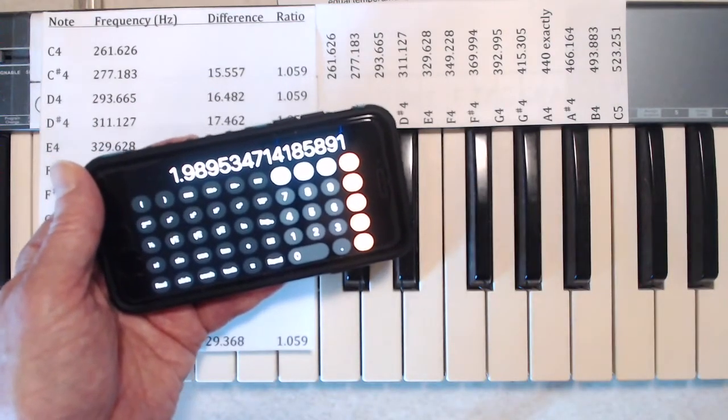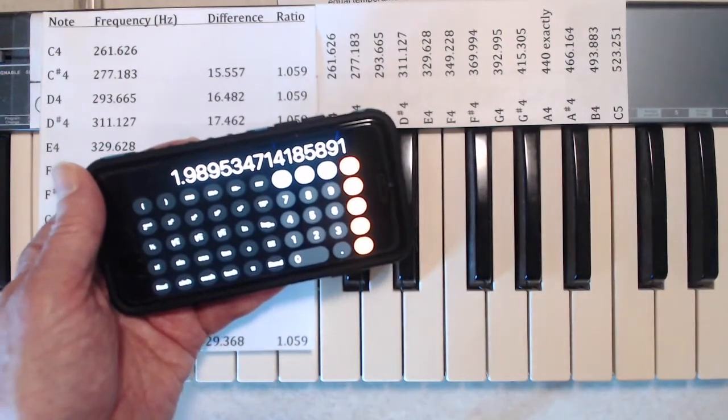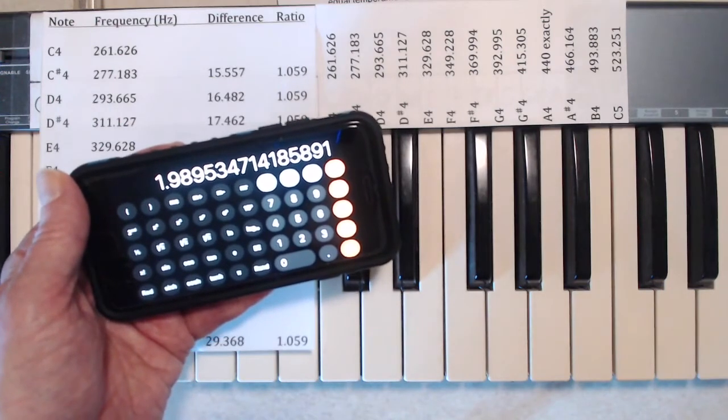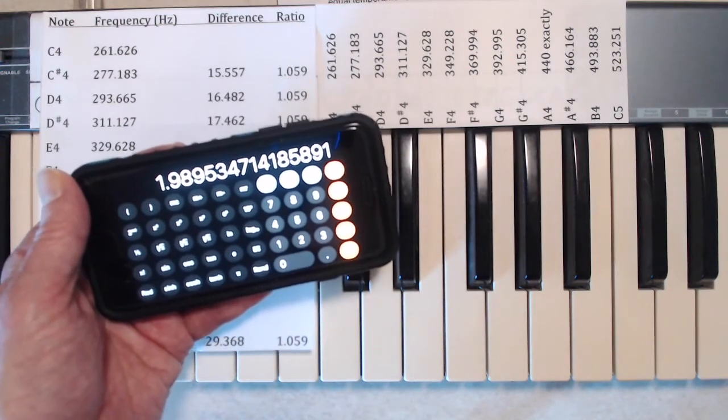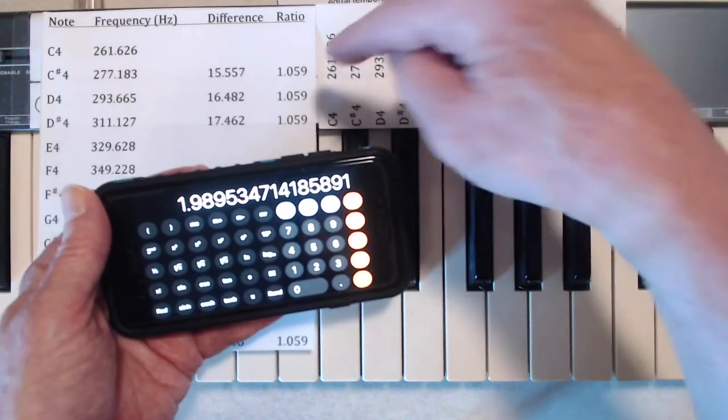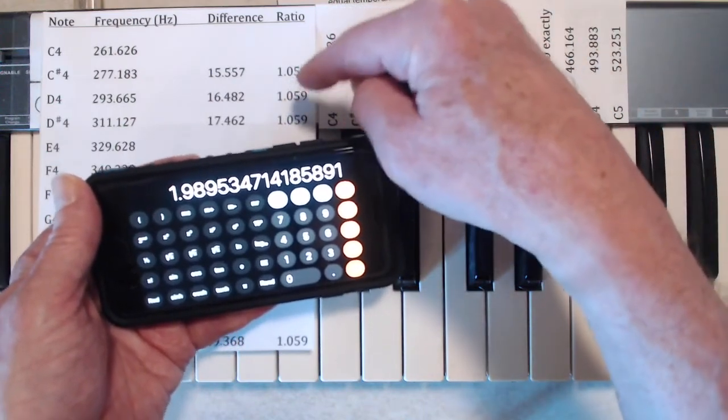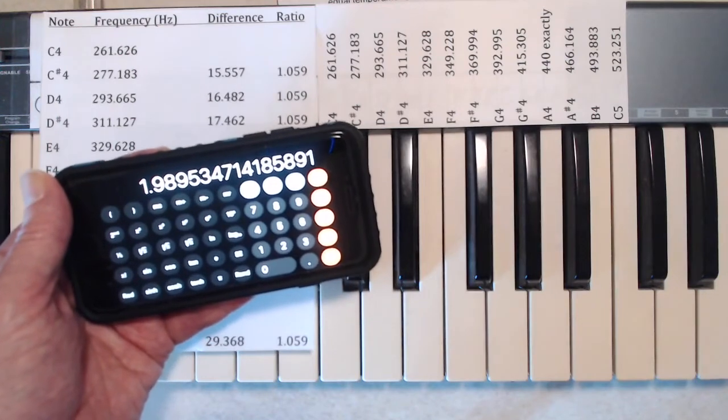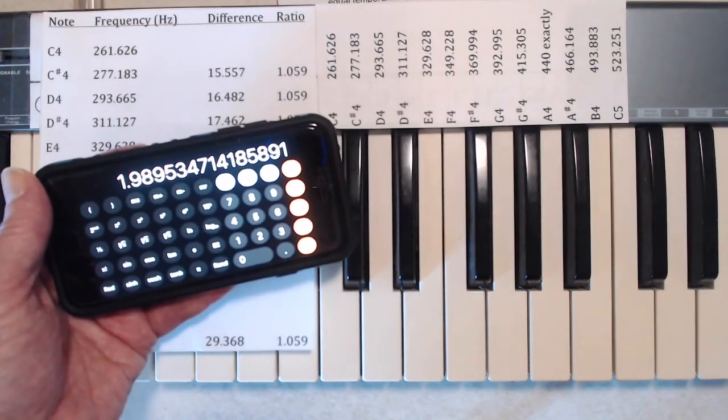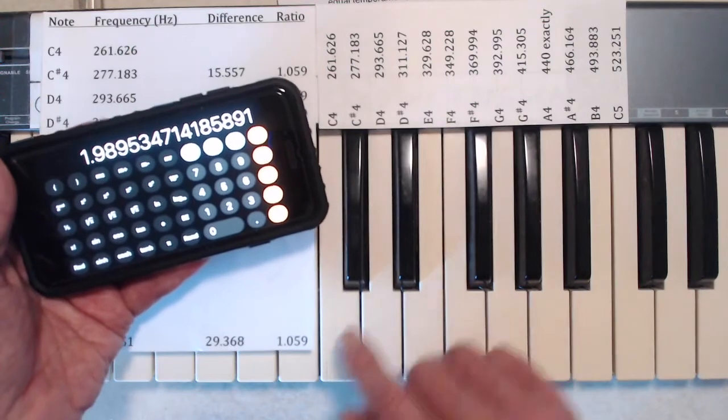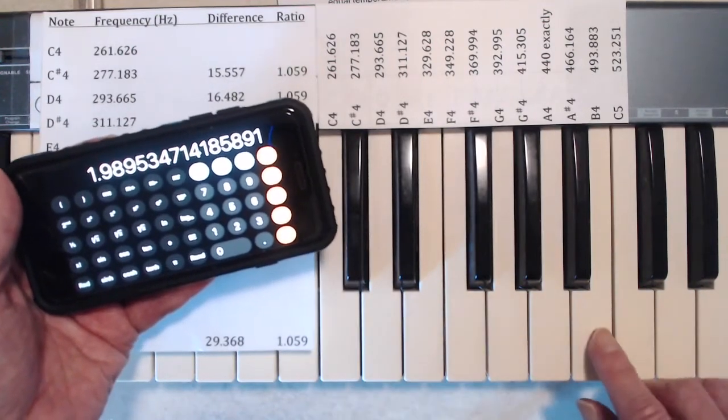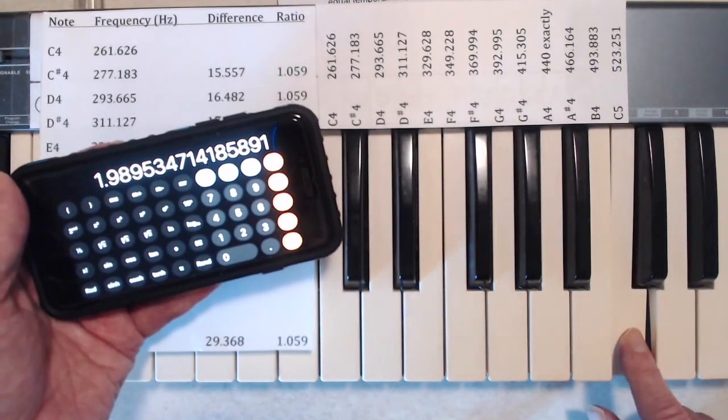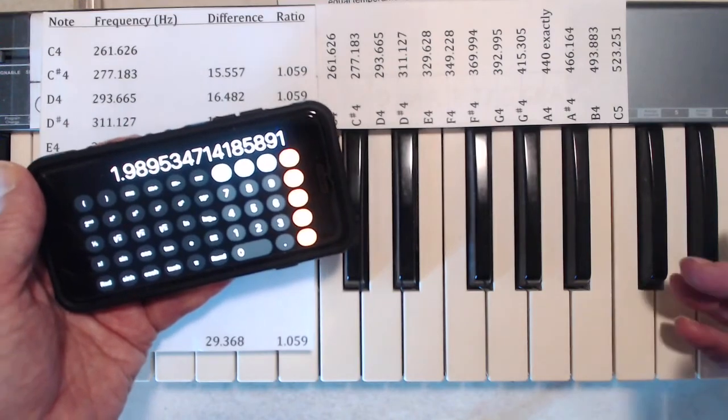And what that will do is multiply 1.059 times 1.059 times 1.059 12 times. And you'll see the result I get is 1.989 etc., which is very, very close to 2. And if I'd used a precise number here, that would have been exactly 2. And that ties in with what we said earlier, that in going from one note to a note that's an octave higher, for example C4 to C5, we double the frequency.